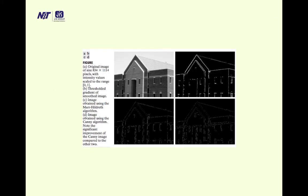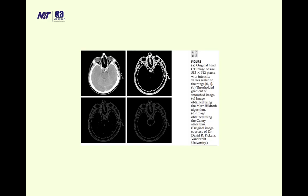The figures show: figure A — original image; figure B — thresholded gradient of smoothed image; figure C — LoG filter or Marr-Hildreth algorithm output; figure D — Canny edge detector output. The Canny edge detector clearly provides the best edge detection result. The same comparison is shown for a CT scan image of 512×512 pixels: A is the original, B is thresholded gradient smoothed, C is Marr-Hildreth or LoG, and D is the Canny output — which shows the best result.